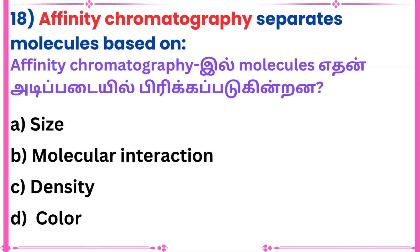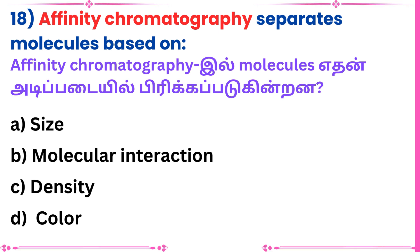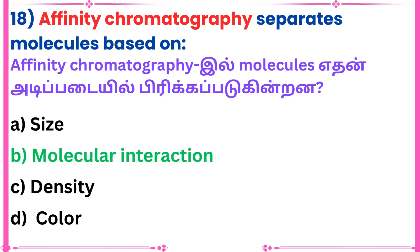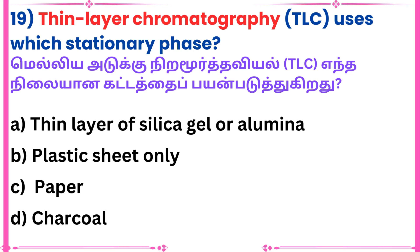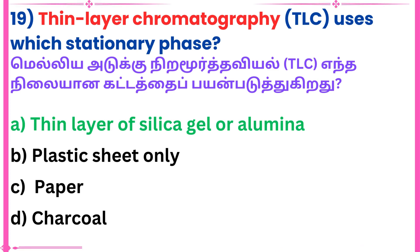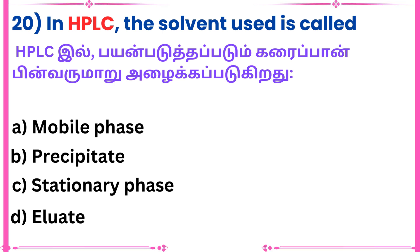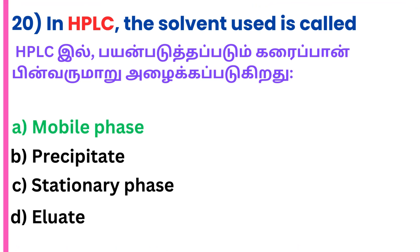Eighteenth question: Affinity chromatography separates molecules based on — Answer: Molecular interaction. Nineteenth question: Thin layer chromatography uses which stationary phase? Answer: Alumina. Twentieth question: In HPLC, the solvent used is called — Answer: Mobile phase.